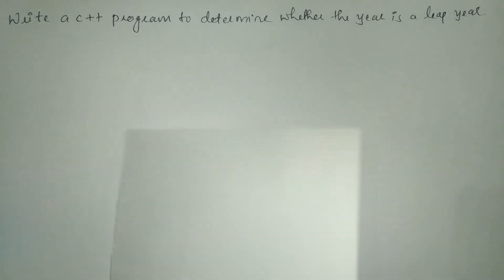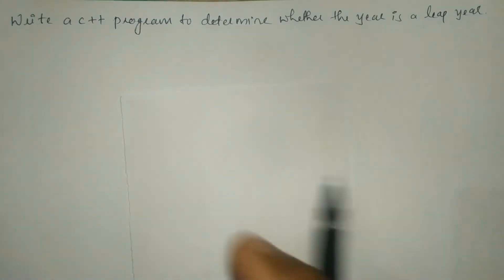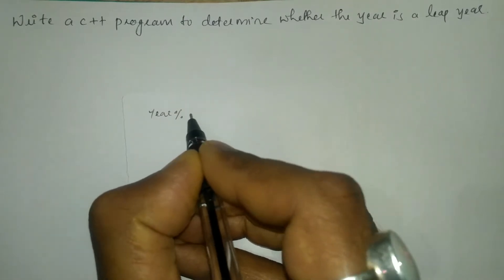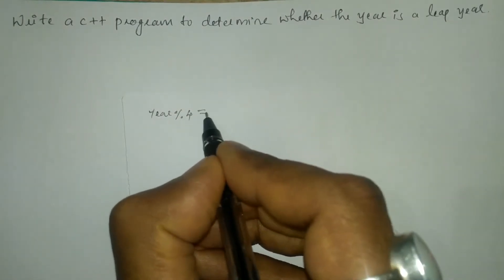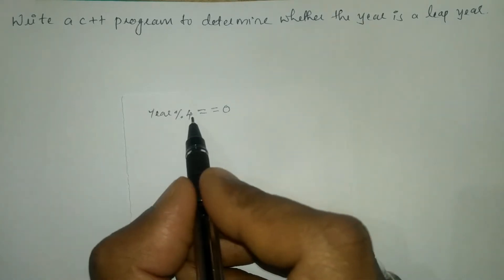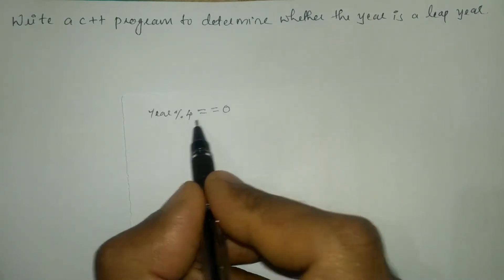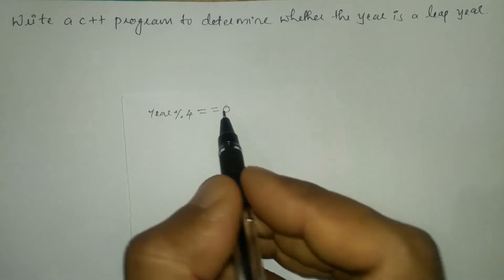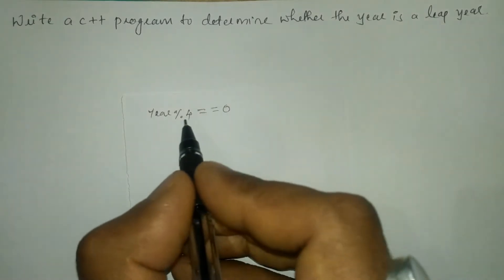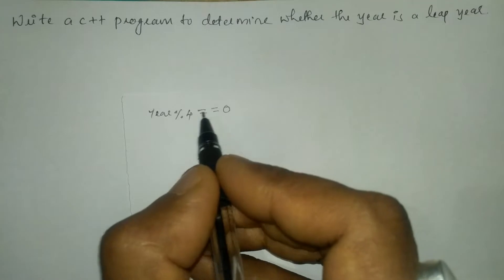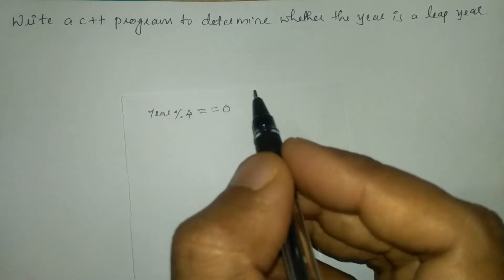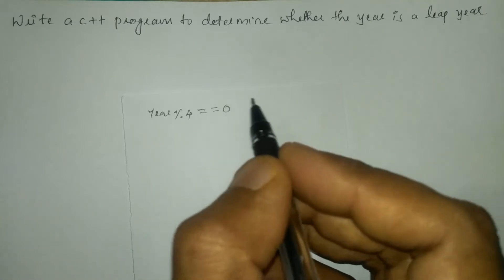Let us try to understand what we mean by leap year. A year which is exactly divisible by 4 — meaning if it gives the remainder zero after dividing the year by 4 — then such years are called leap years. Sometimes some years consist of February 29, that is one extra day in the regular calendar.